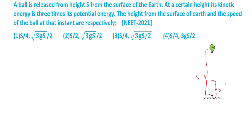At height x, its kinetic energy is 3 times its potential energy — that is, KE = 3 × PE. The height from the surface of the earth and the speed of the ball at that instant are respectively asked. We need to calculate x (the height from the surface) and v (the velocity at that point).